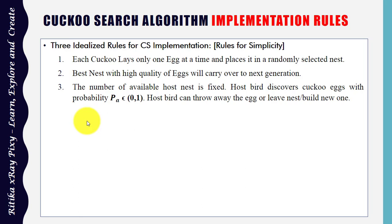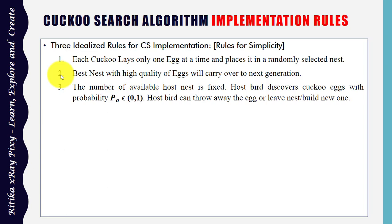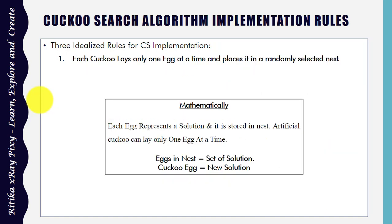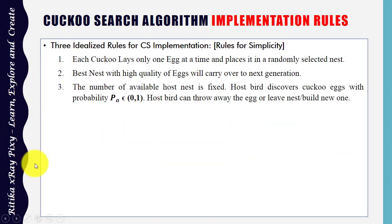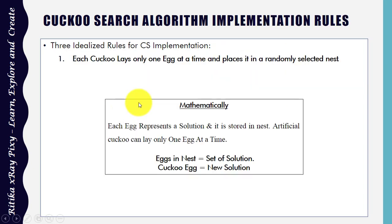The three rules for the simplicity of this algorithm are: First, each cuckoo lays only one egg at a time and places it in a randomly selected nest. Second, the best nest with the highest quality egg will carry over to the next generation. Third, the number of available host nests is fixed, and once the egg is discovered by the host bird, it can throw it away or build a new nest. There is approximately a 10% probability of discovery of a cuckoo egg.